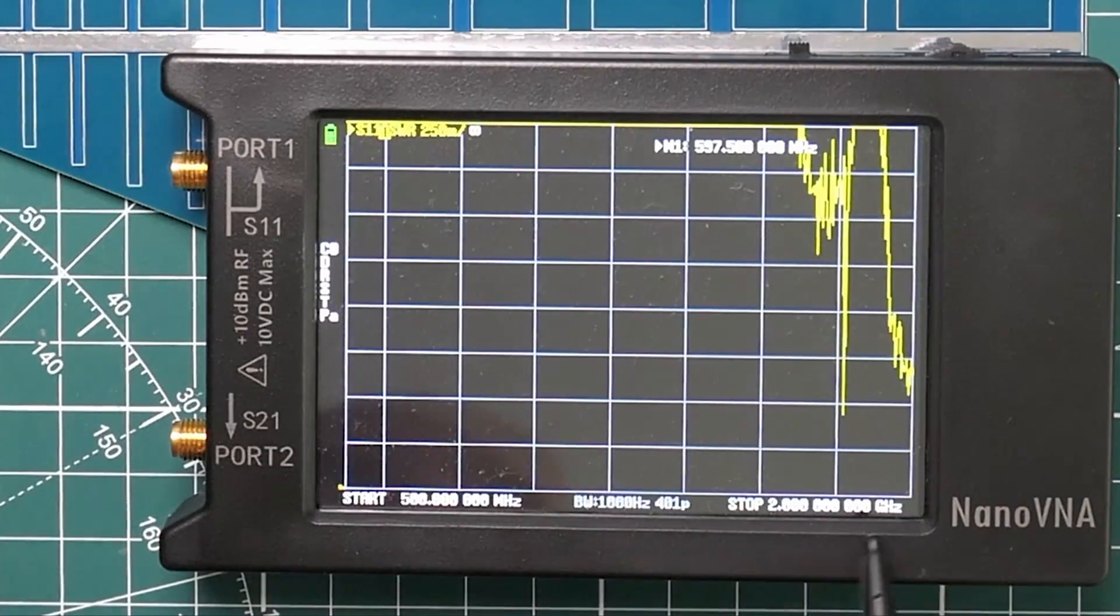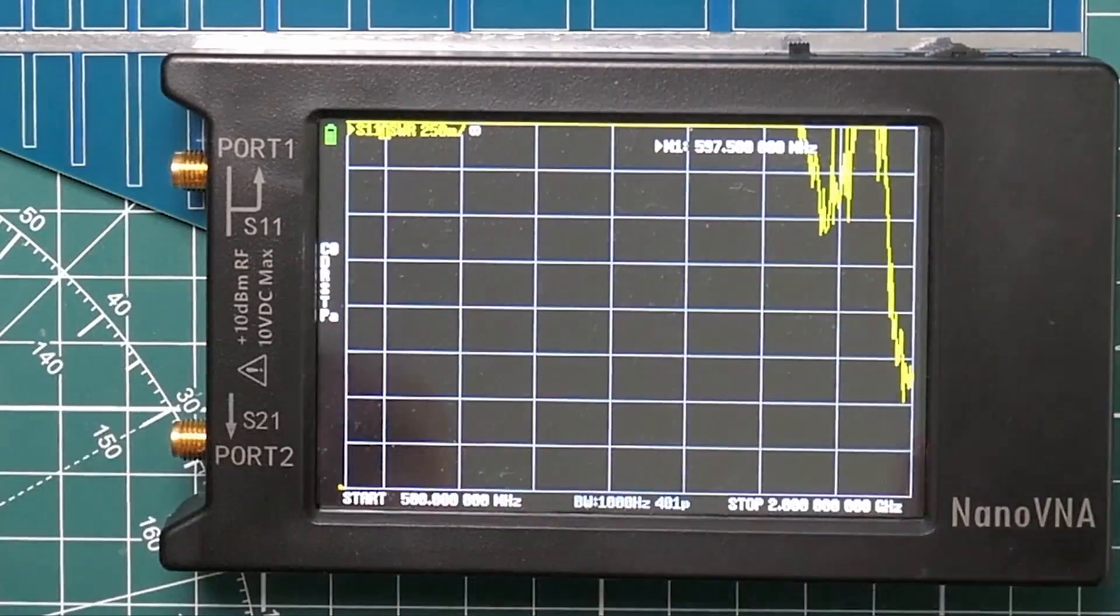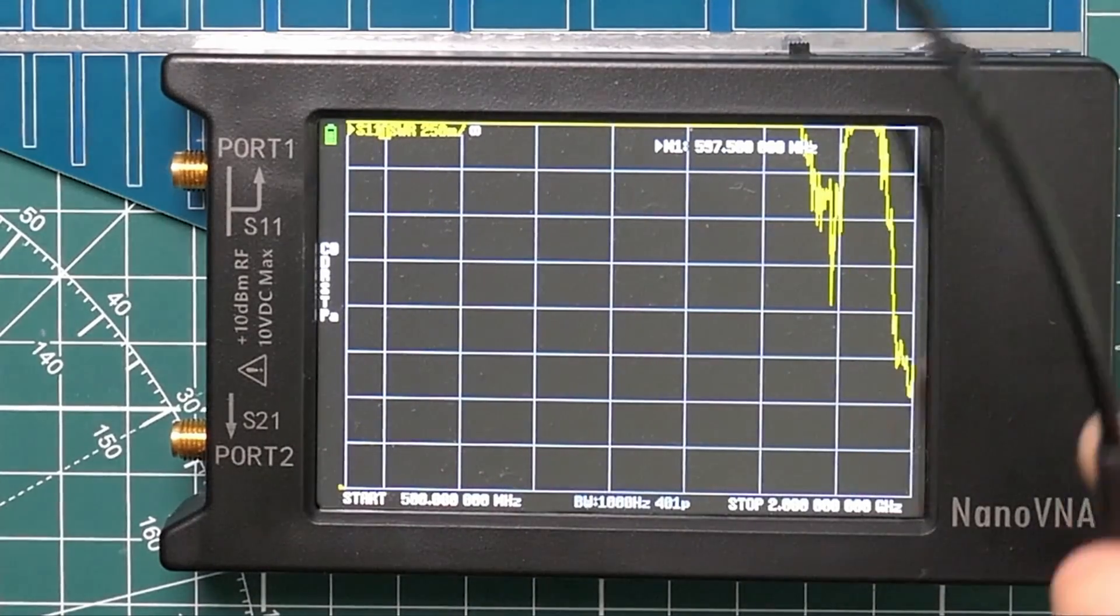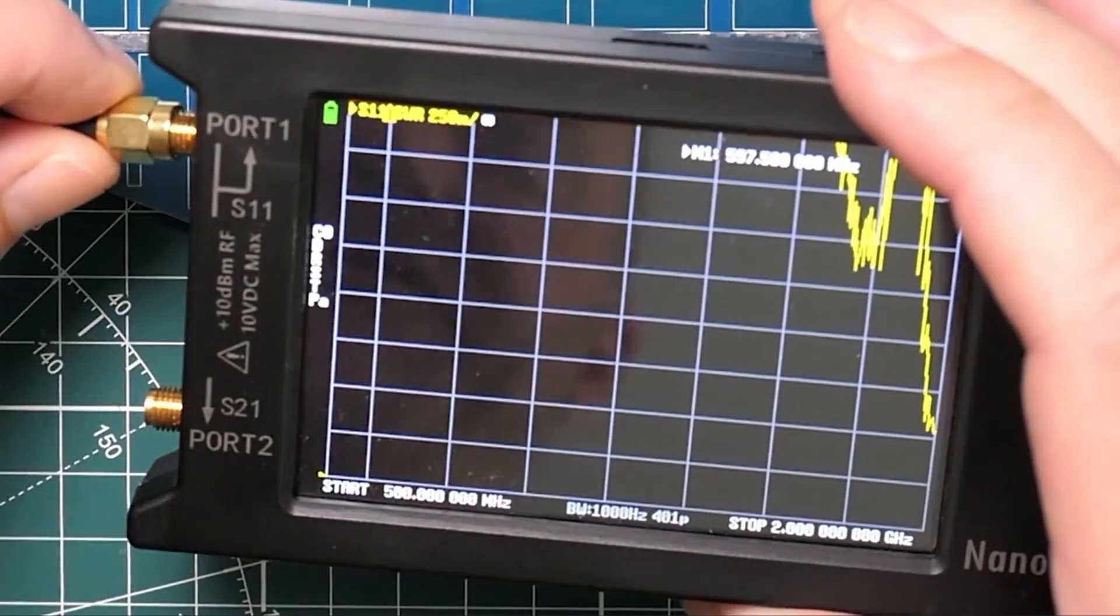I've set up the span between 500 megahertz and two gigahertz. I need to do the calibration again because I've been fiddling around. I found a better wire. So I'm going to do the calibration now. I'll fast forward this bit.